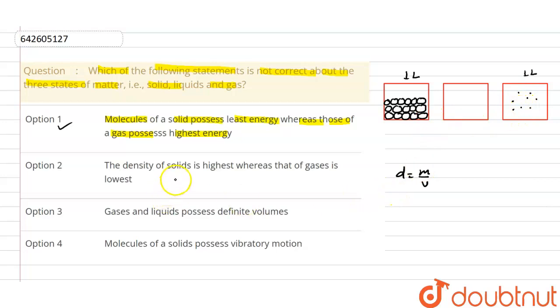can say the density of the solid is greater than density of gases. That is also correct. Next, gases and liquids possess definite volume. No, gases and liquids do not possess definite volume, or we can say liquid possesses definite volume. Let's suppose one liter of water is taken in any bottles or